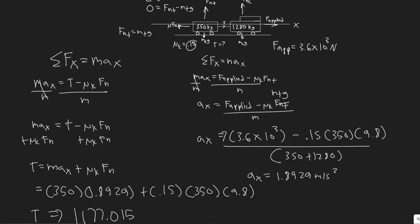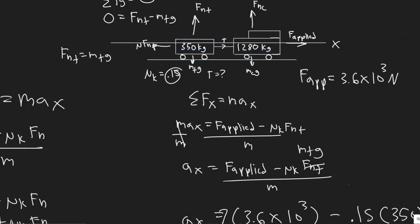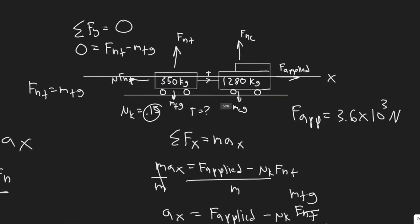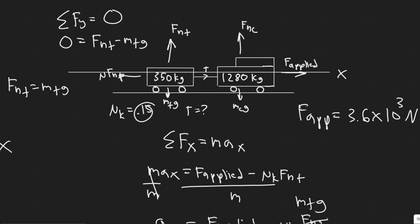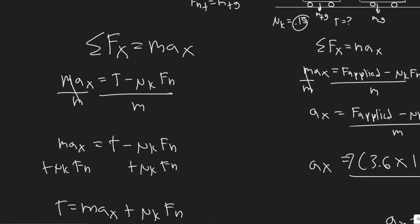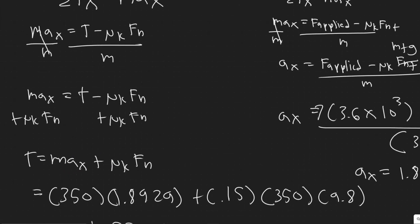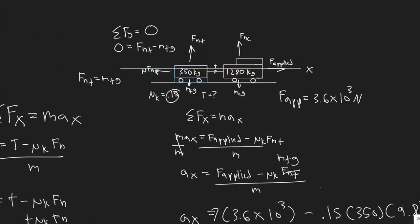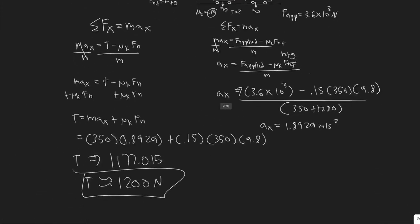Quick recap: start with your free body diagram — you should always do that. Then, since we're solving for T, sum the forces in X to get the acceleration. With the acceleration, focus on just one object and solve for T by summing forces in X again. The trick to this problem was recognizing you can ignore T if you treat the system as one big object. The answer is 1200 newtons.